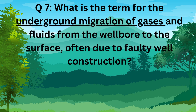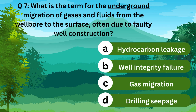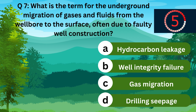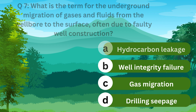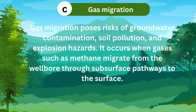Question 7. What is the term for the underground migration of gases and fluids from the wellbore to the surface, often due to faulty well construction? A. Hydrocarbon leakage. B. Well integrity failure. C. Gas migration. Or D. Drilling seepage. The correct answer is C. Gas migration.